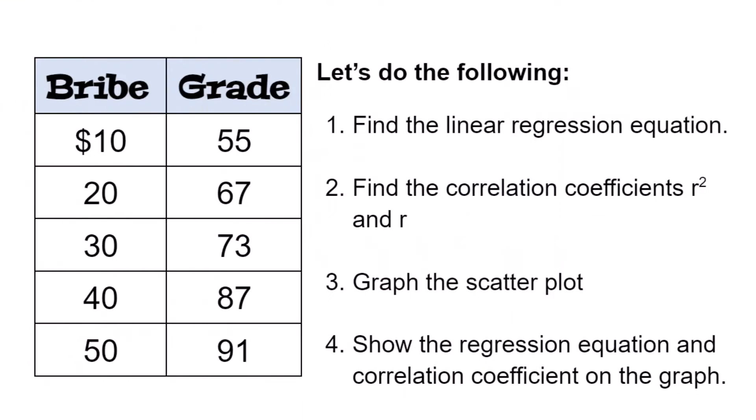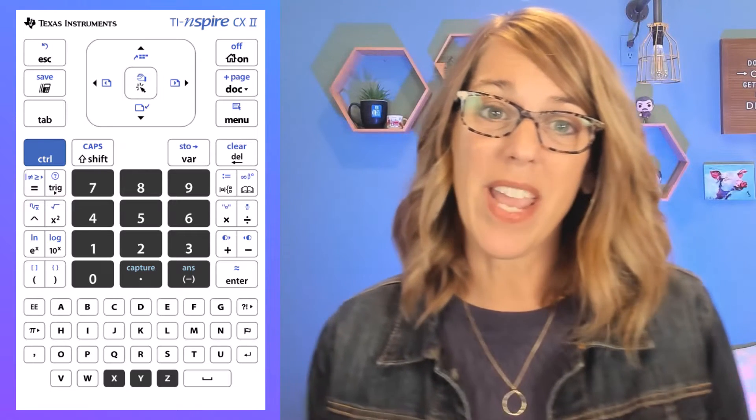We're going to work with this data and find all the things. We're going to do a scatter plot, a linear regression, and find that correlation coefficient r and r squared. We're going to start by entering our data.